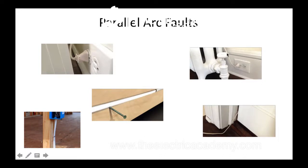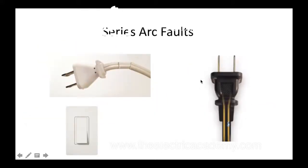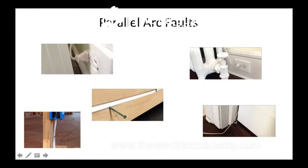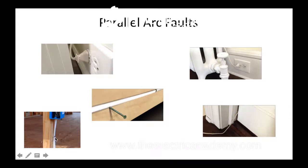Other instances include cords by a radiator — heat wrecks insulation — and sunlight will break down insulation integrity. Also, when you put an extension cord by a door and close the door on it, that pushes on the insulation, on the hot and the neutral. Nails or screws through a wire are another issue — and I'm talking to you drywallers. Also, over-stapling: when you pound that staple in too far and pinch the wire, you could wreck the insulation or cause some sort of compromise in the insulation.